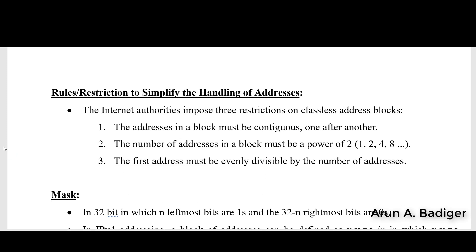To assign any classless IP addressing, we have to follow some rules. The first rule says that the addresses in the block must be contiguous — contiguous means they should be continuous. For example, if we start from 41, the next IP should be 42, then 43, 44, and so on continuously.